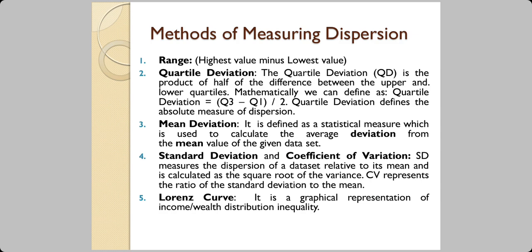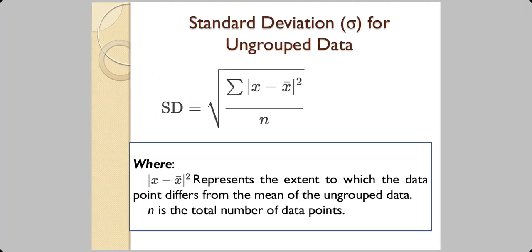Mean deviation and standard deviation are covered. Lorenz curve is mentioned as a method for dispersion measurement but is not detailed in the chapter. For ungrouped data, the standard deviation formula is: σ = √(Σ|x − x̄|² / n), where the difference between each value x and the mean x̄ is squared (so negatives are handled), and n is the total number of data points.